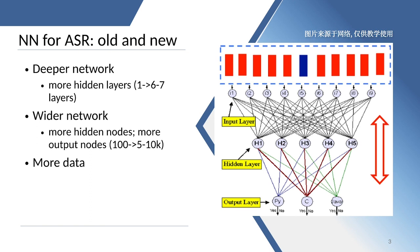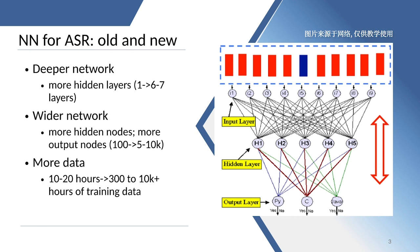For example, DNN-based speech recognition needs 10 to 20 hours of training data with small model capacity, and needs 300 to 10,000 hours of training data with big model capacity.